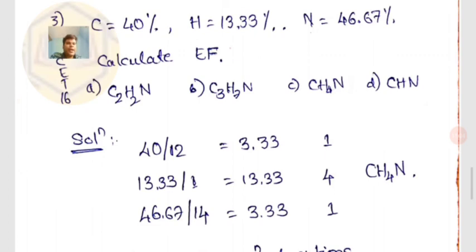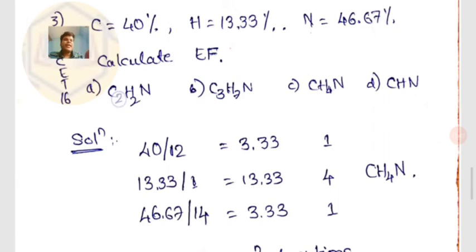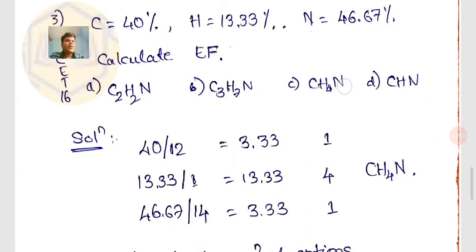You could also verify this by working backwards — take one of the answer options, calculate its percentage composition, and check if it matches the given data. If carbon gives 40%, hydrogen gives the right percentage, and nitrogen gives the right percentage, then that is the correct empirical formula. Either method leads to the same answer: CH₄N.